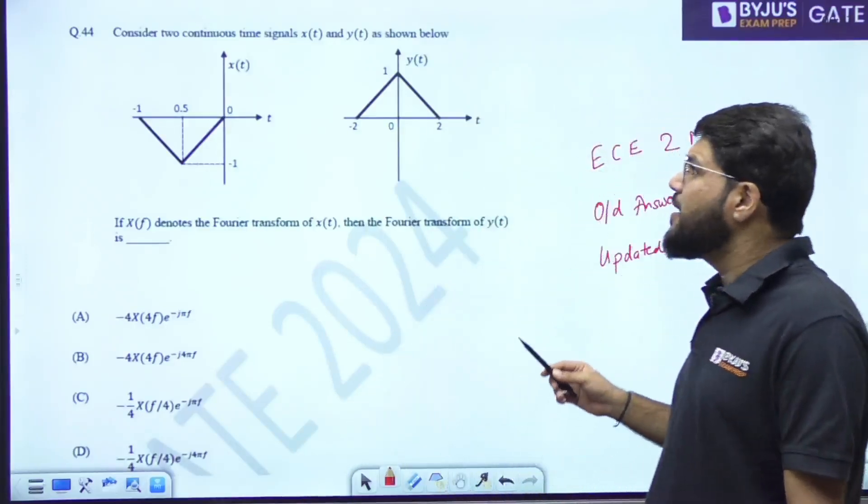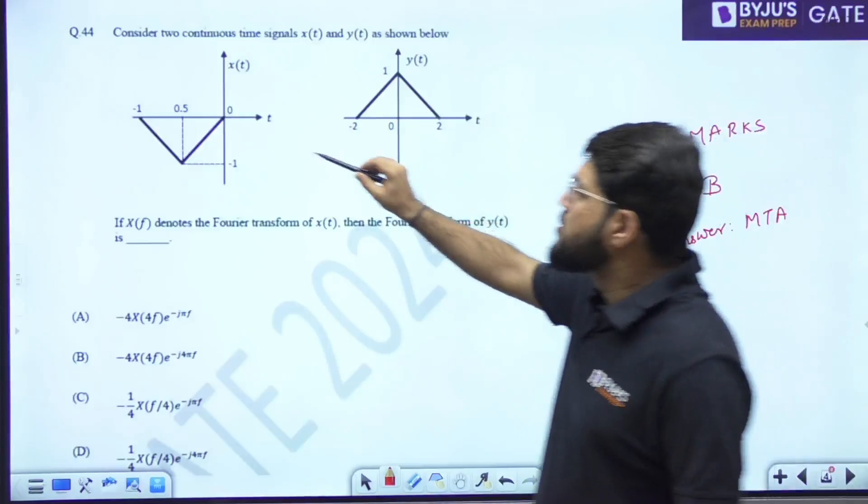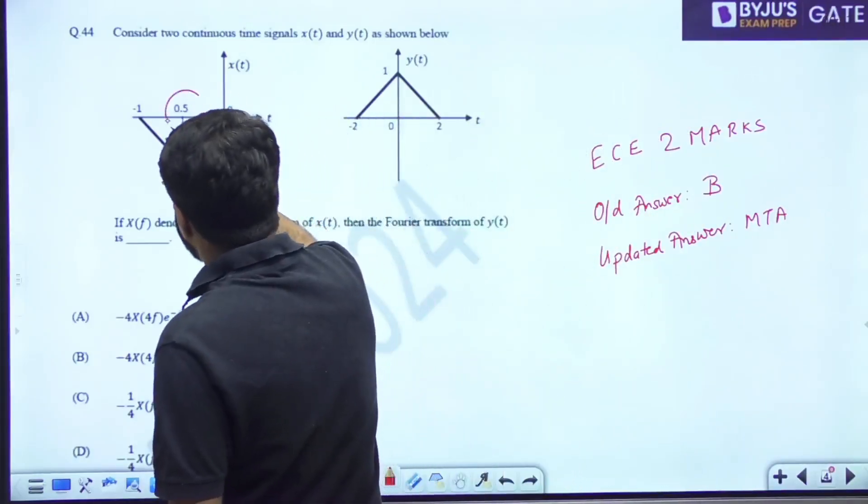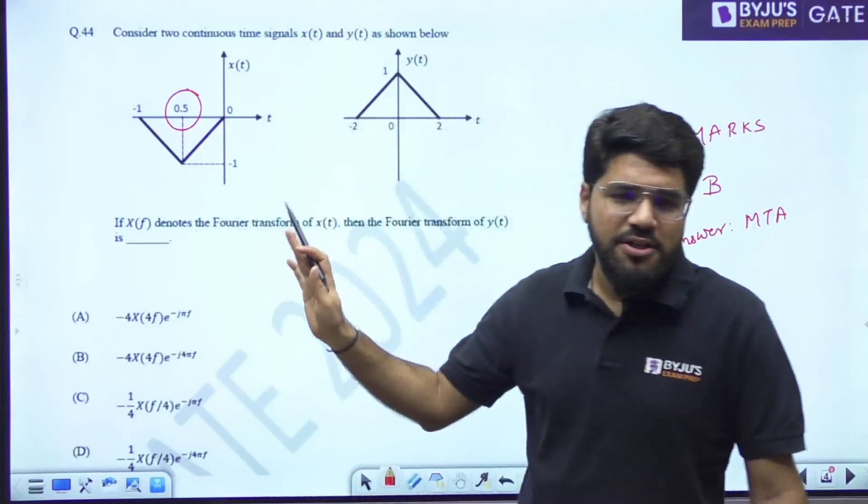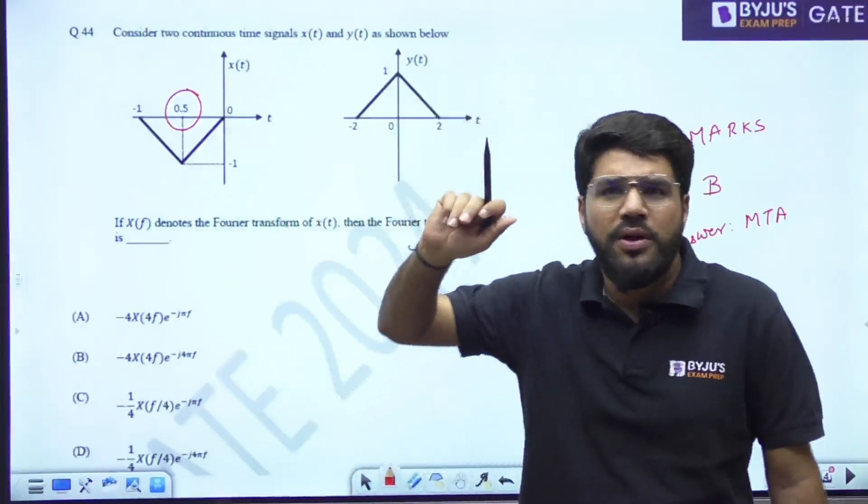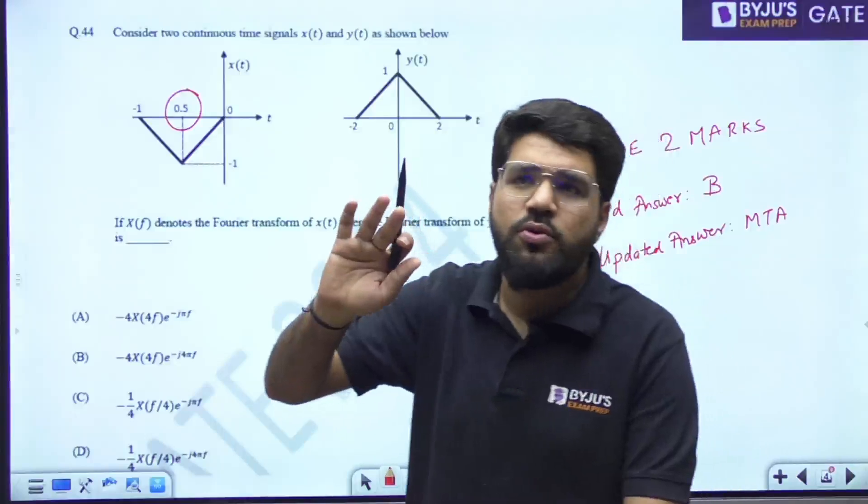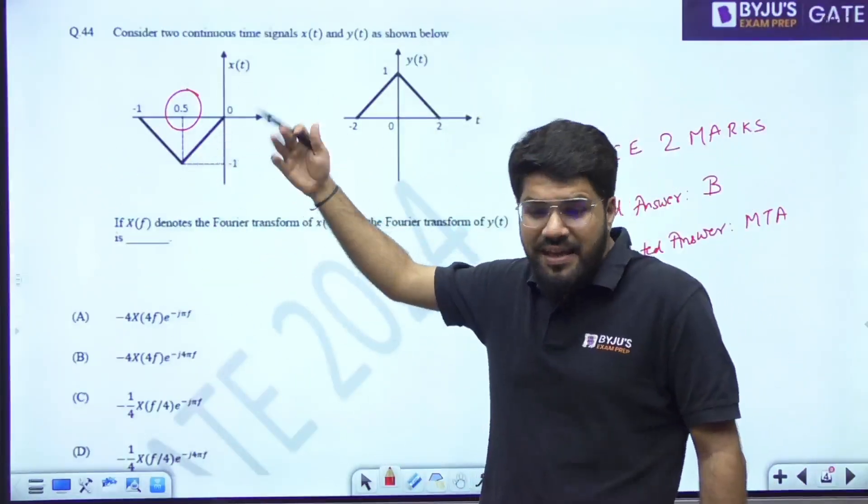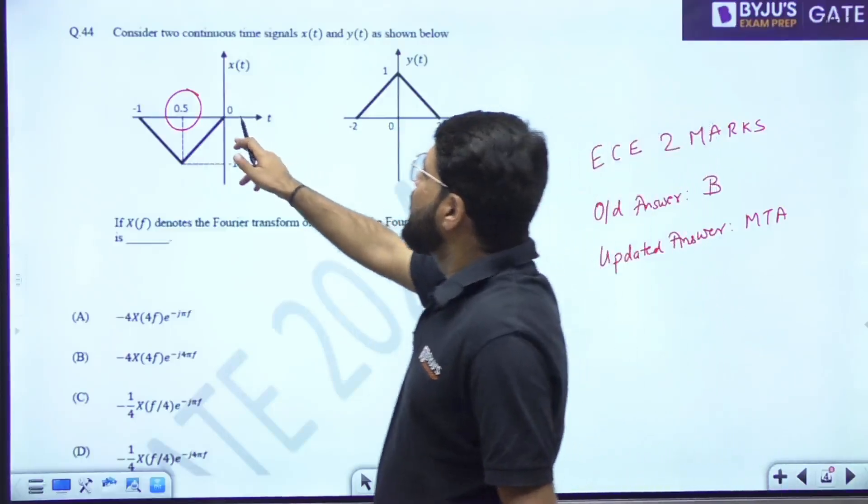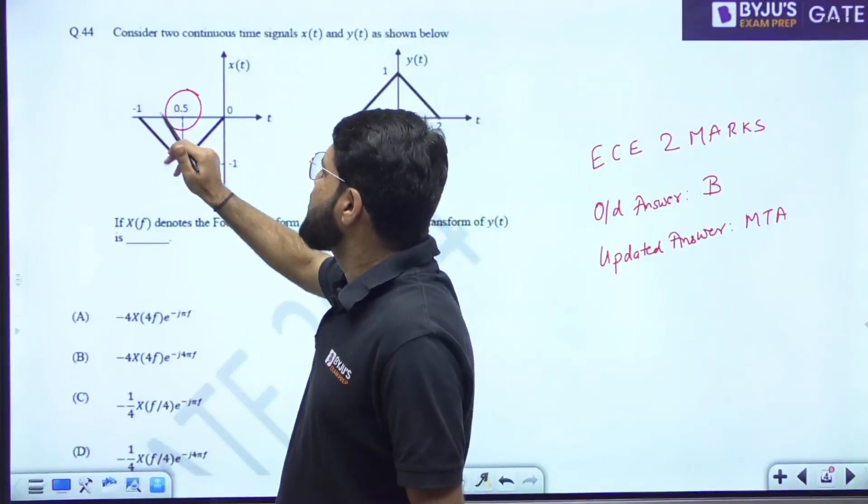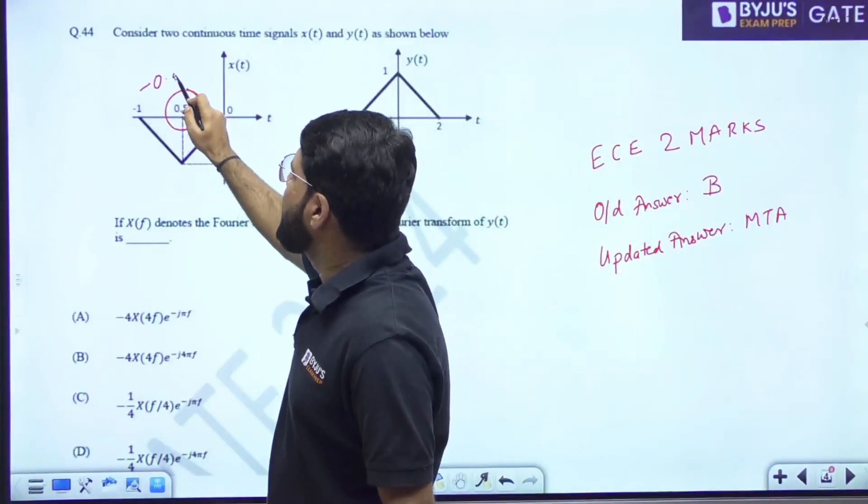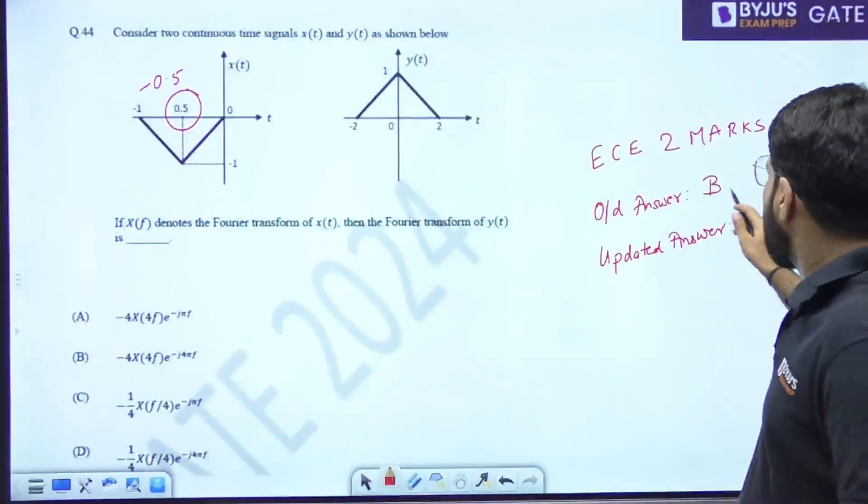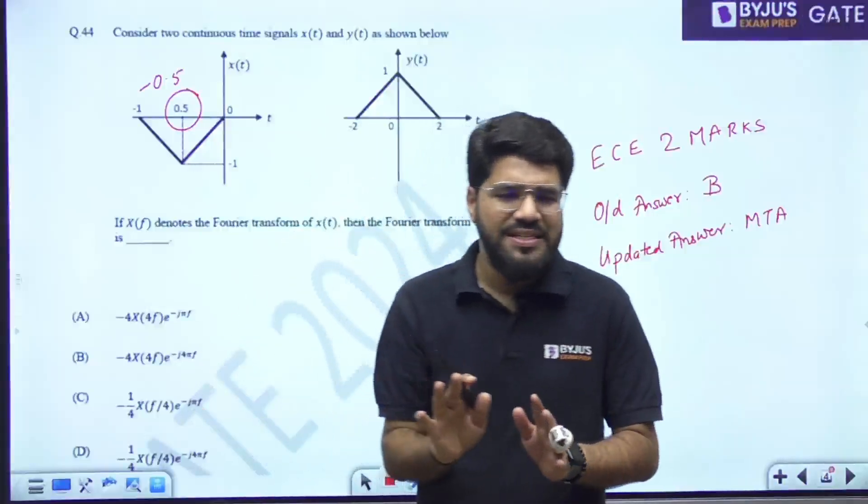Of course, students might have challenged it. That is why maybe because of that consideration, IISC would have taken it as MTA. The only problem with this question is, look into it, it's an understood problem. Even I, personally honestly, when I solved this question for the first time, I also did not notice. Nobody who's good at technical, who's good at mathematics, will notice such things. This is an unnecessary issue created. The only thing is this is range 0 to -1, so this has to be -0.5. Because of this typing error, IISC has to give it as marks to all.